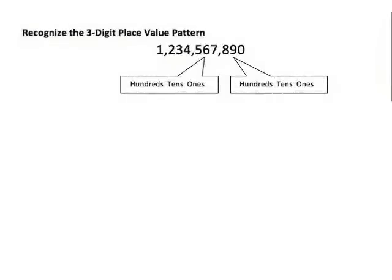It's important to be able to recognize the three-digit place value pattern that occurs in our number system. You may have noticed that every time we write numbers, after every three digits, we put a comma. The reason we do that is because we're separating the periods of our number system. Every three digits represents a period. Inside each of these periods is this repeating pattern of ones, tens, and hundreds. So every time I jump to the next period, the next group of three digits, this pattern continues — ones, tens, and hundreds — and so on.